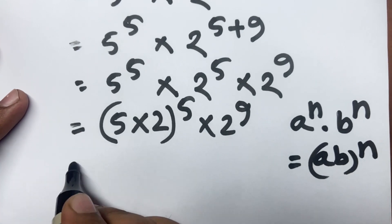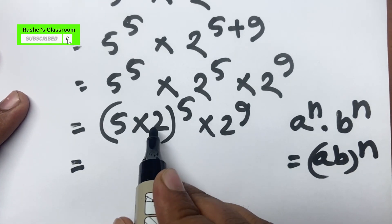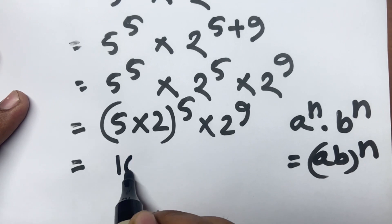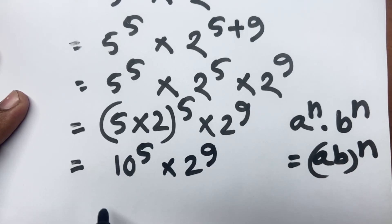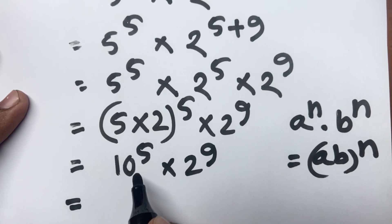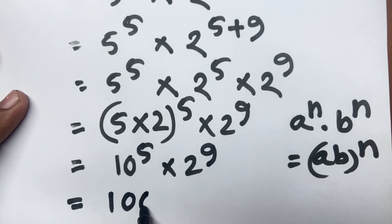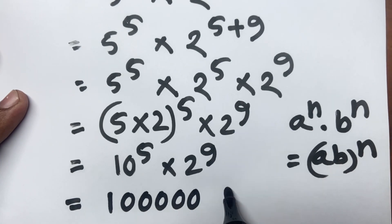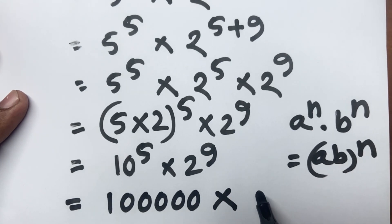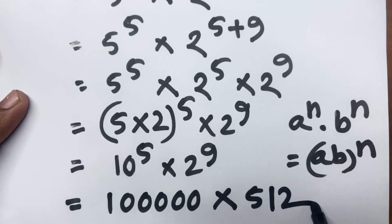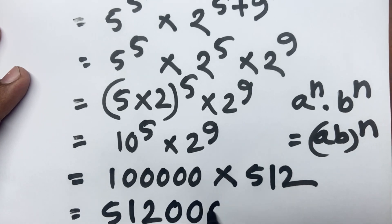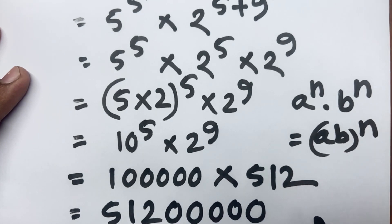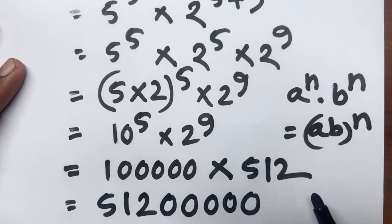So now I can say here is 10 to the power 5 times 2 to the power 9. We know 10 to the power 5 equals 100,000 and 2 to the power 9 equals 512. So 512 times 100,000 gives us 51,200,000,000. This is the answer. If you enjoyed this video, please subscribe to my channel.